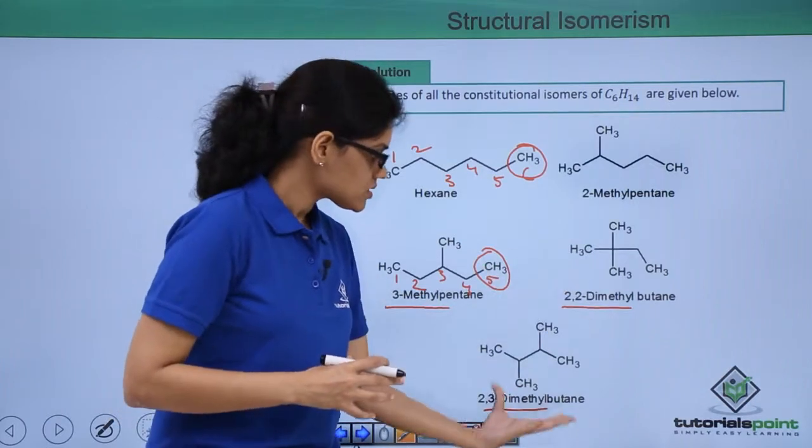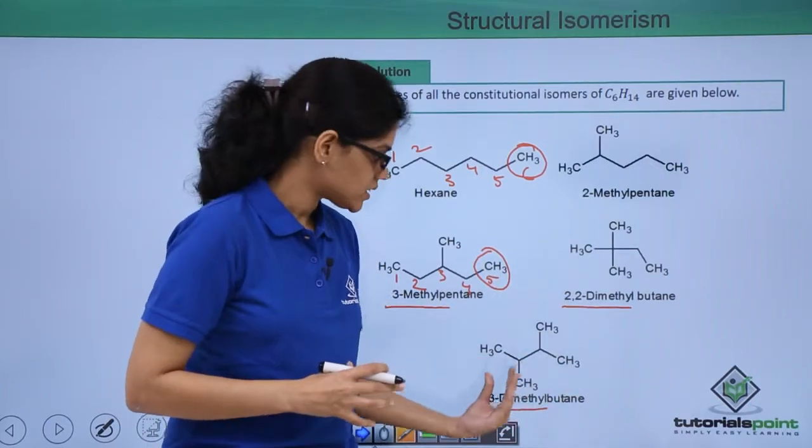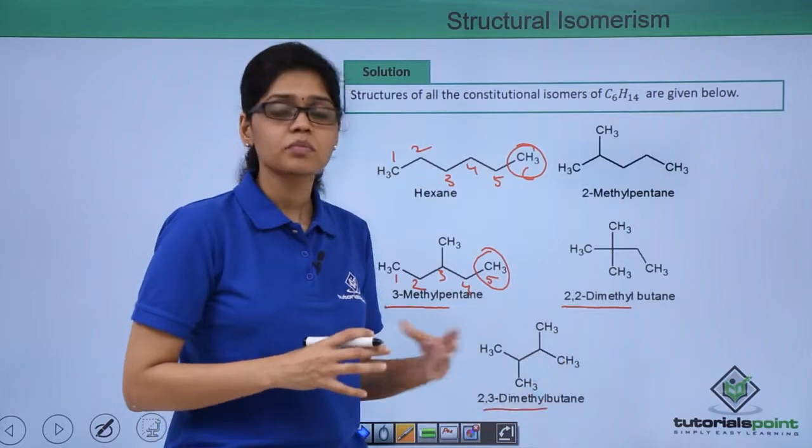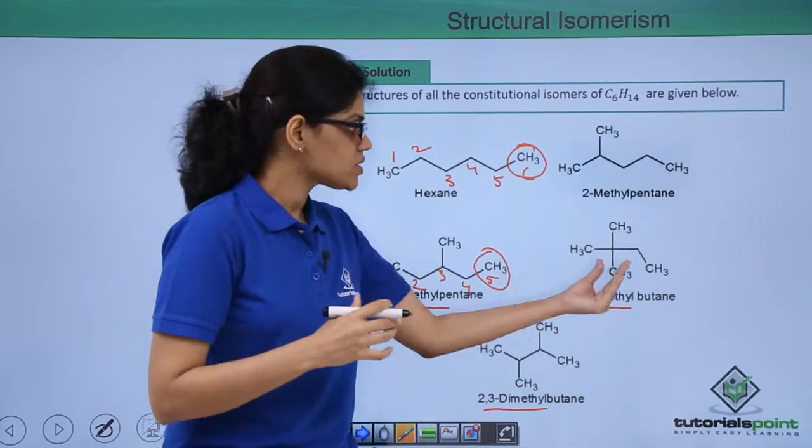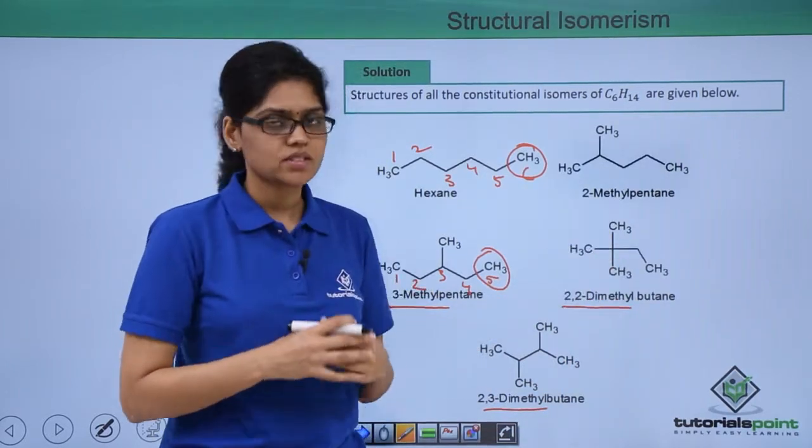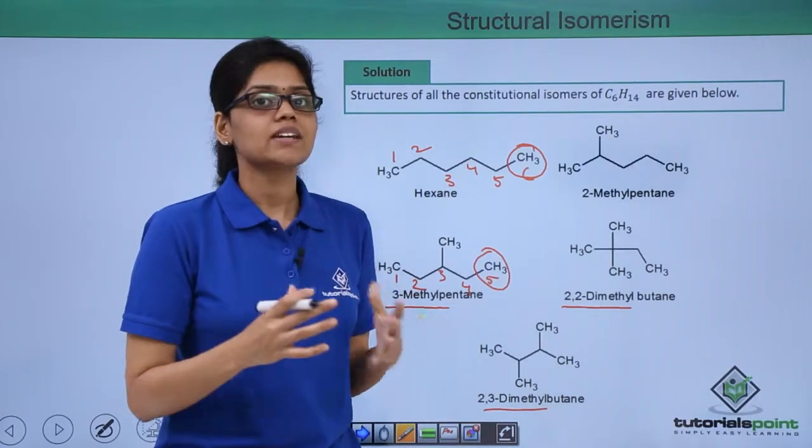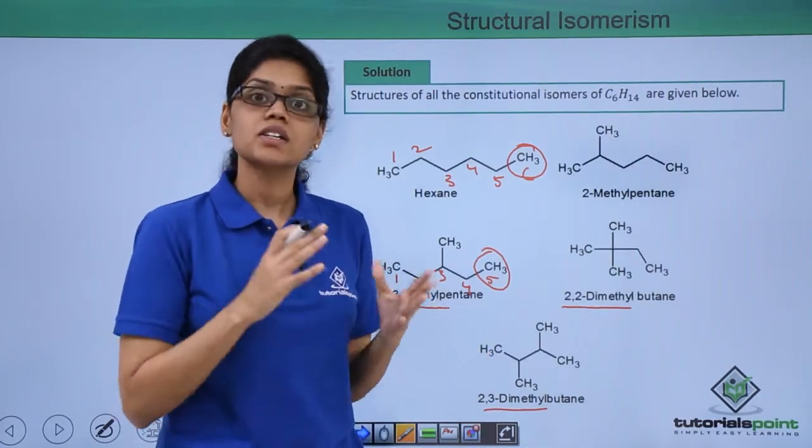The final structures we have are based on butane, which are the dimethylbutanes. If you try to change the position of these methyl groups with respect to each other, you can see that you do not get any further different structures.